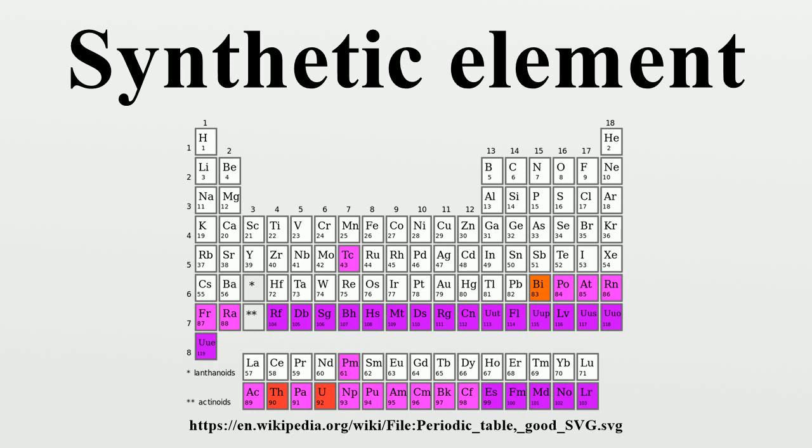Not all radioactive elements are synthetic. For instance, uranium and thorium have no stable isotopes but occur naturally in the Earth's crust and atmosphere. Unstable elements such as polonium, radium, and radon, which form through the decay of uranium and thorium, are also found in nature.